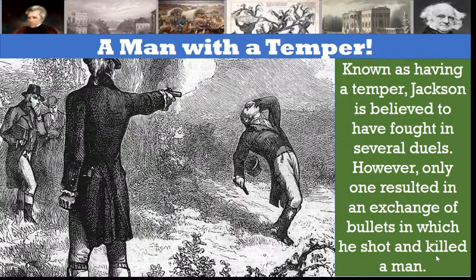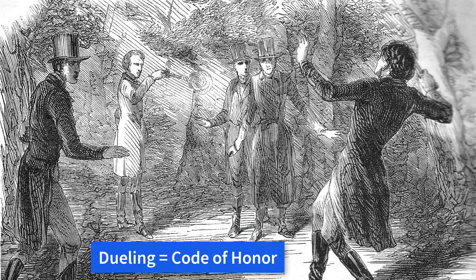Known as having a temper, Jackson is believed to have fought in several duels. However, only one resulted in shots fired, in which he killed a man named Charles Dickinson, whom he accused of cheating on a horse bet. It should be pointed out that dueling, especially in the South, was a fairly accepted way to settle disputes of one's honor.